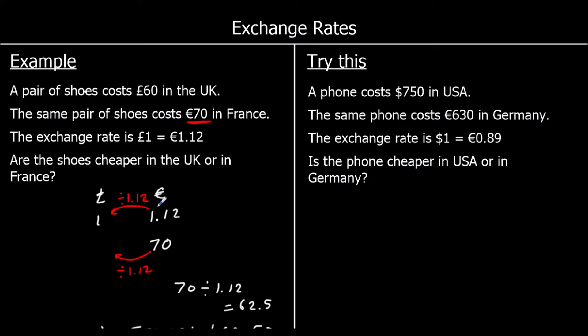A phone costs $750 in the USA. The same phone costs 630 euros in Germany. The exchange rate is $1 is equal to 89 cents. Is the phone cheaper in the USA or Germany? We need to make them the same to compare them — we can make them both in euros or both in dollars. Let's change them into euros.